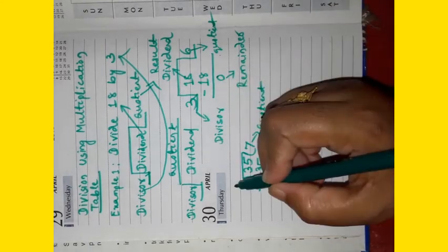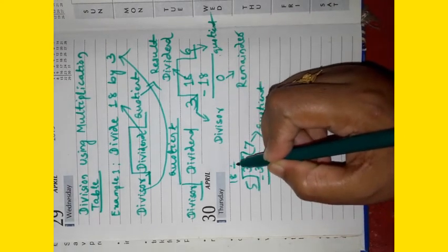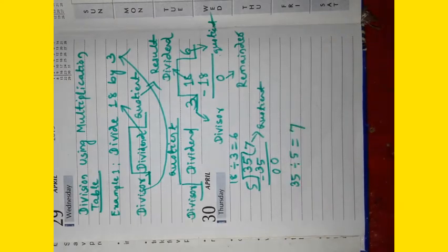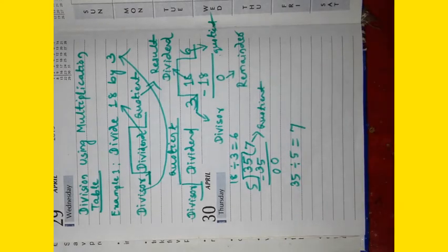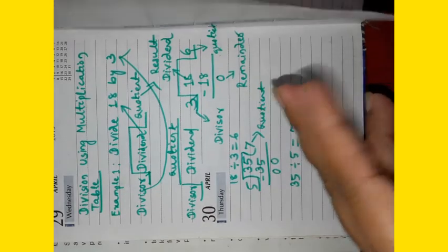Here also we can write 18 divided by 3 equals 6. Then let us discuss another example.